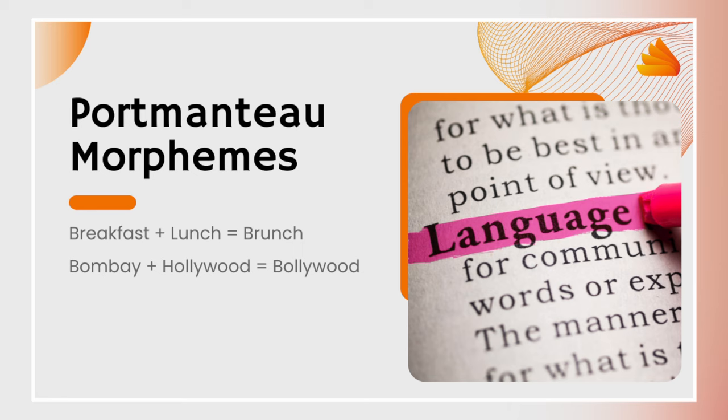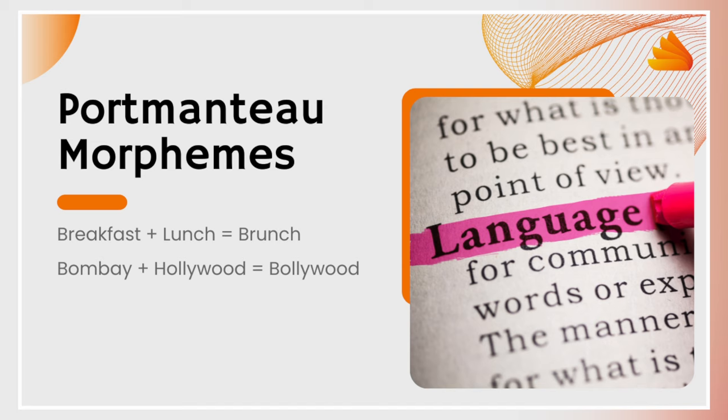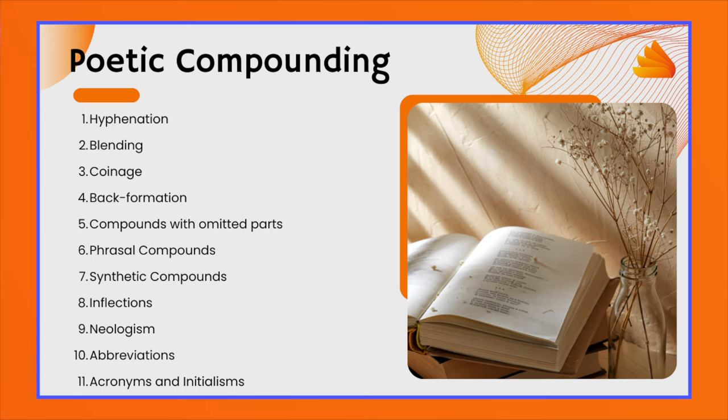Poetic compounding is a group of techniques through which poets and writers create new words. It's a very creative process that not only enriches a language but also makes it beautiful. In short, poetic compounding is the process of combining two or more words to create a new word or to intensify the emotional effect in a poem or novel. For example, portmanteau: from breakfast plus lunch we made brunch; from Bombay plus Hollywood we made Bollywood. This technique is also known as blending or portmanteau morphine.